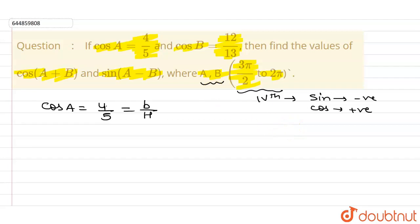So we know there is a relation given by Pythagoras theorem: H² equals B² plus P². So here H is 5, so 5² is 25 equals 4² is 16 plus P². So P² equals 25 minus 16, that is 9. So I can say that P is 3, so I can write here sin A is 3/5.